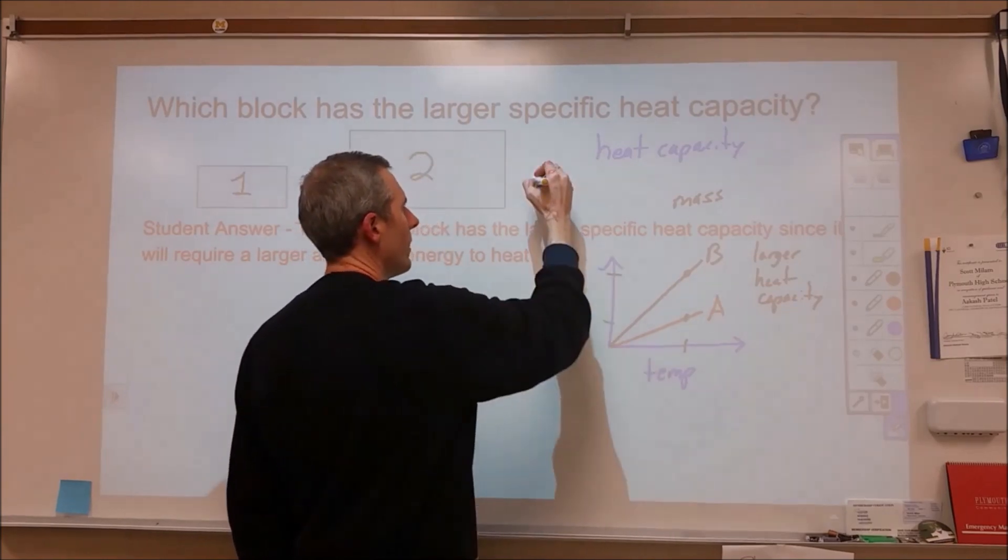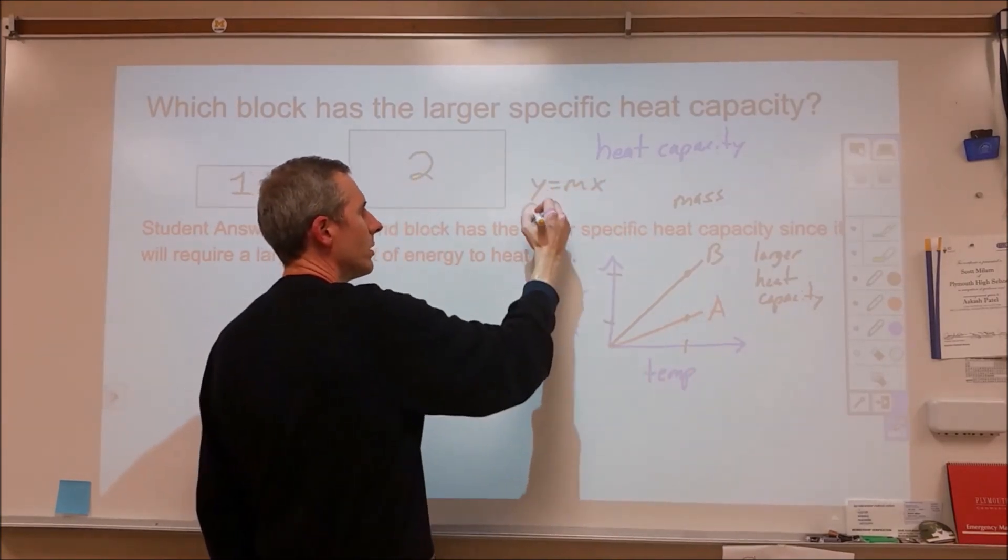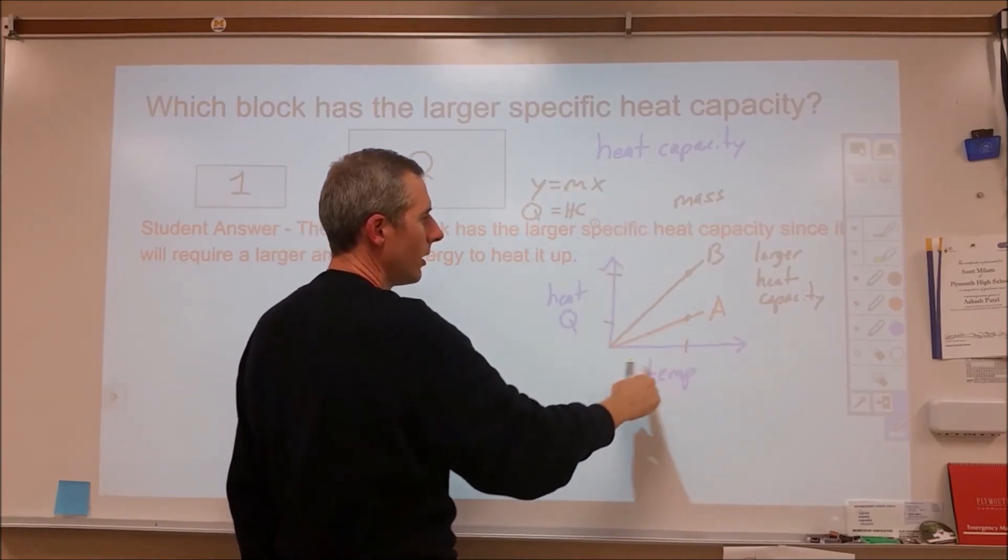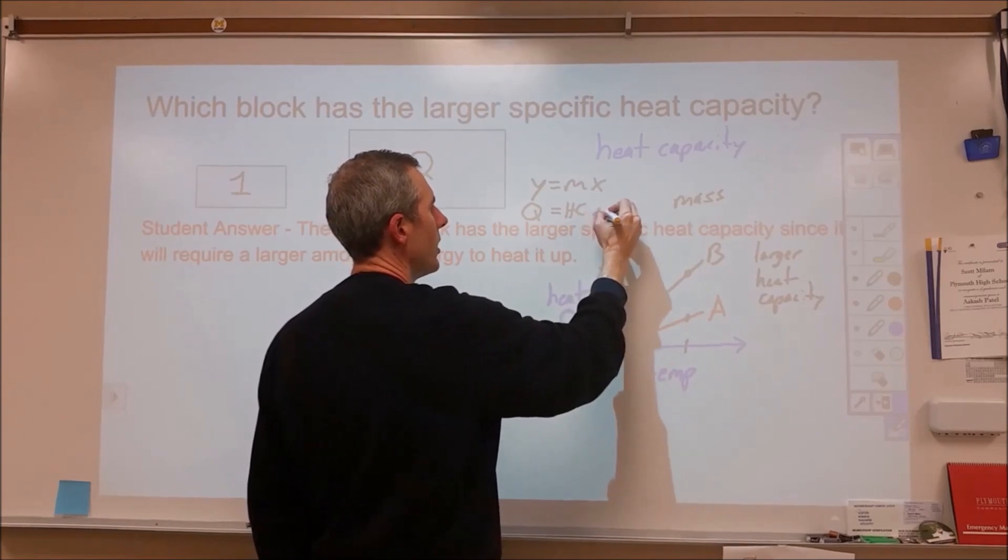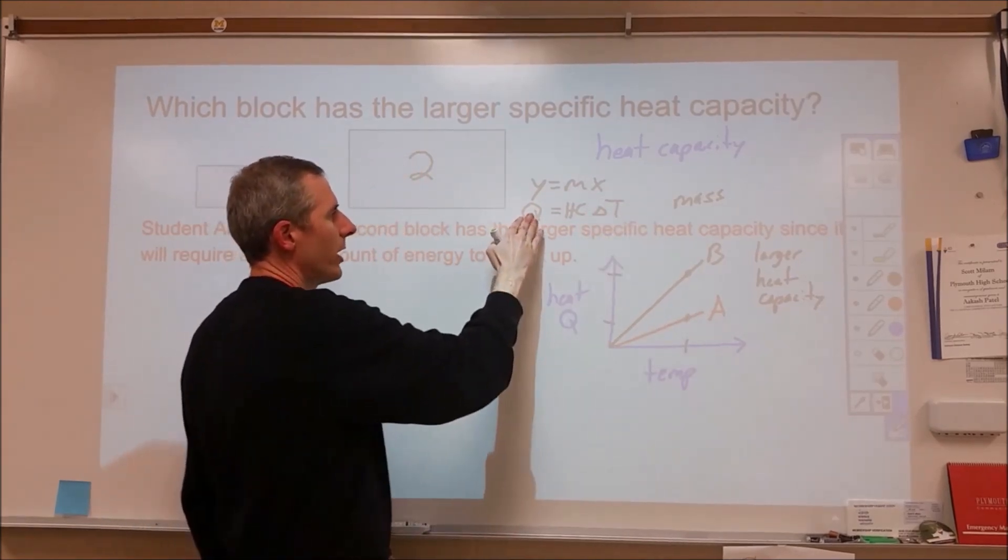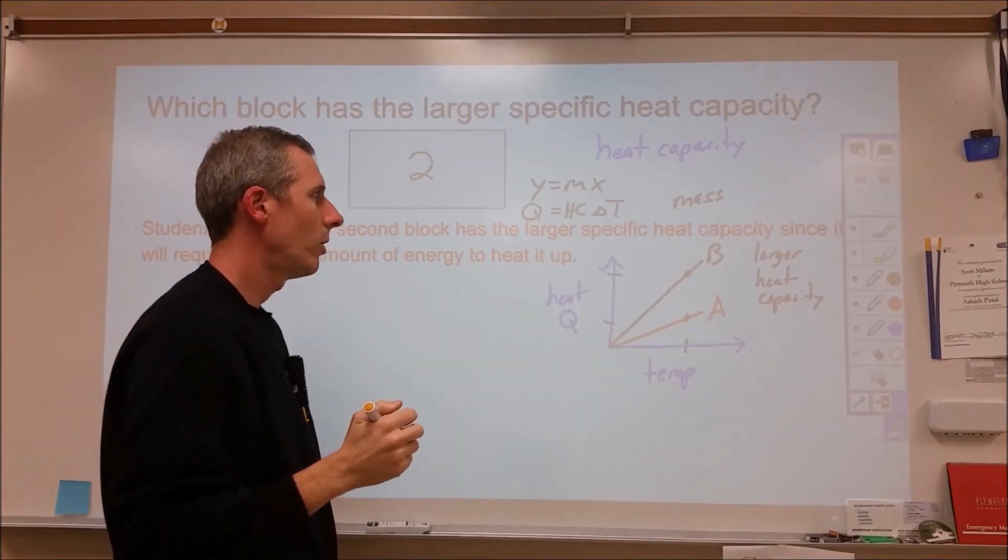If we think about the slope here as our heat capacity, we can write out our function in a y equals mx form, where y is heat and m is our slope, that's our heat capacity, and our change in x here is our change in temperature. So heat capacity relates how much energy is supplied versus how much the temperature of that particular substance changes.